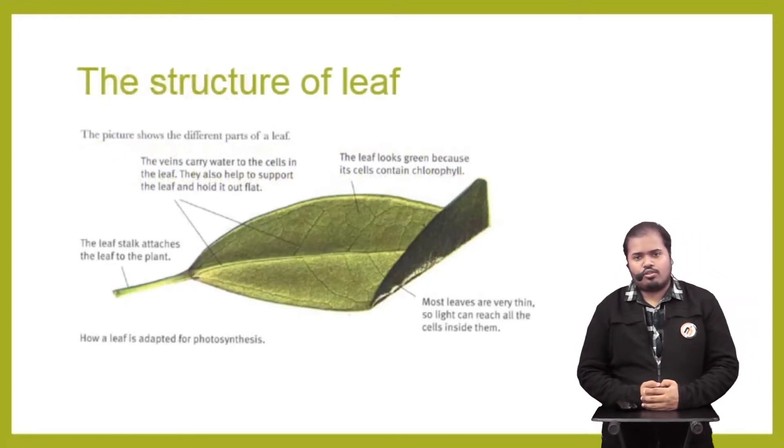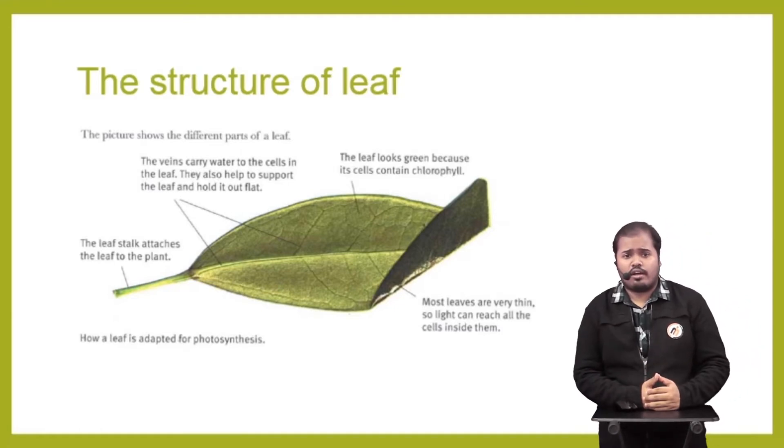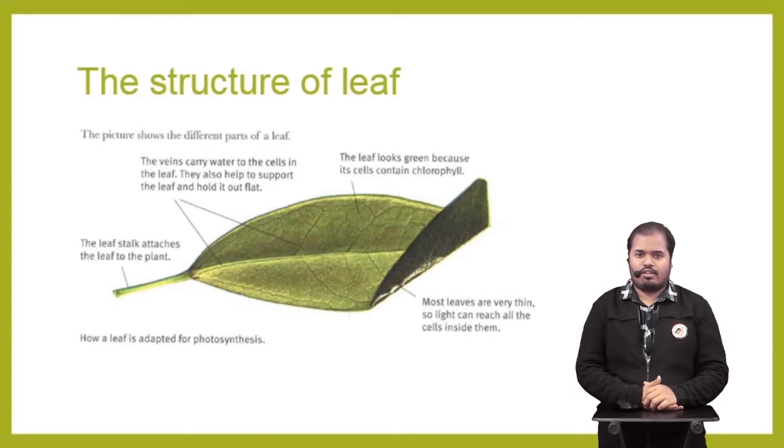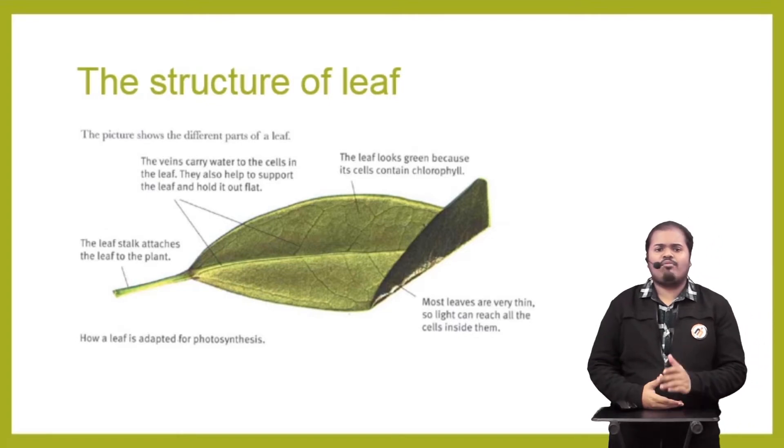Now we are looking at the structure of a leaf. The picture shows a leaf with veins where the veins carry water and nutrition throughout the plant and leaves. The leaves look green because they contain chlorophyll. There is a stalk which holds the leaf to the plant, and most leaves are thin so sunlight can reach all the cells inside them.